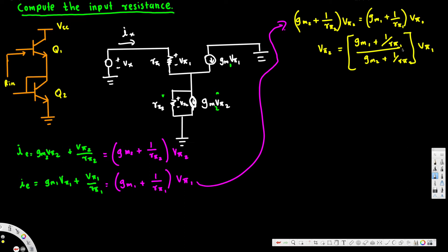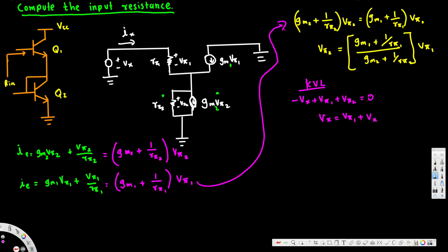Now if we apply Kirchhoff's Voltage Law around the loop, we get: minus vx plus v51 plus v52 equals zero, so vx is equal to v51 plus v52.